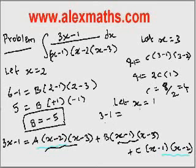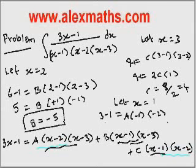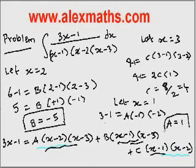When x is equal to 1, the last two terms become 0, and we get 3 minus 1 equals A into minus 1 into minus 2. By simplifying, 2A equals 2, so A equals 1.